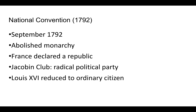The National Convention is much more radical than the Legislative Assembly and is formed in 1792. One of their first acts is to abolish the monarchy — the king is no longer part of the system. They declare France a republic, where the people would vote and elect their leaders and representatives. The Jacobin Club becomes the radical political party, and Louis XVI loses his noble titles and is reduced to an ordinary citizen.